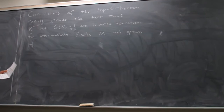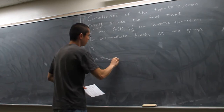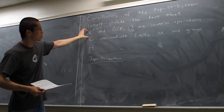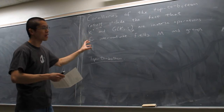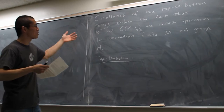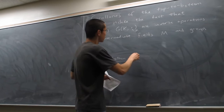Two lectures ago I promised you that the top-to-bottom result — the single statement that the fixed field of something and the group of something that fixes a base field are inverse operations for just the top field K and the bottom field F — can in fact be used to deduce the general result that this is inverse for all intermediate fields M and H. So let me just state what the top-to-bottom result is.